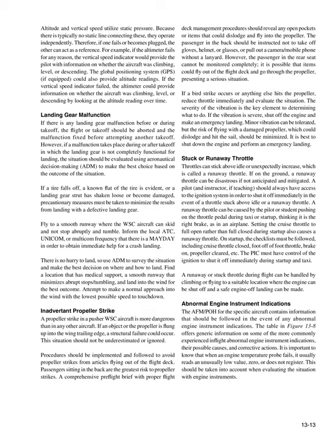Altitude and vertical speed indicators utilize static pressure and operate independently. Therefore, if one fails or becomes plugged, the other can act as a reference. For example, if the altimeter fails, the vertical speed indicator provides information on whether the aircraft was climbing, level, or descending. The GPS, if equipped, could also provide altitude readings. If the vertical speed indicator failed, the altimeter could provide information on whether the aircraft was climbing, level, or descending by looking at the altitude reading over time.